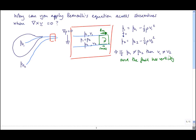Conversely, the other thing it implies is that if P01 is equal to P02, then V1 is equal to V2, and the fluid has no vorticity.